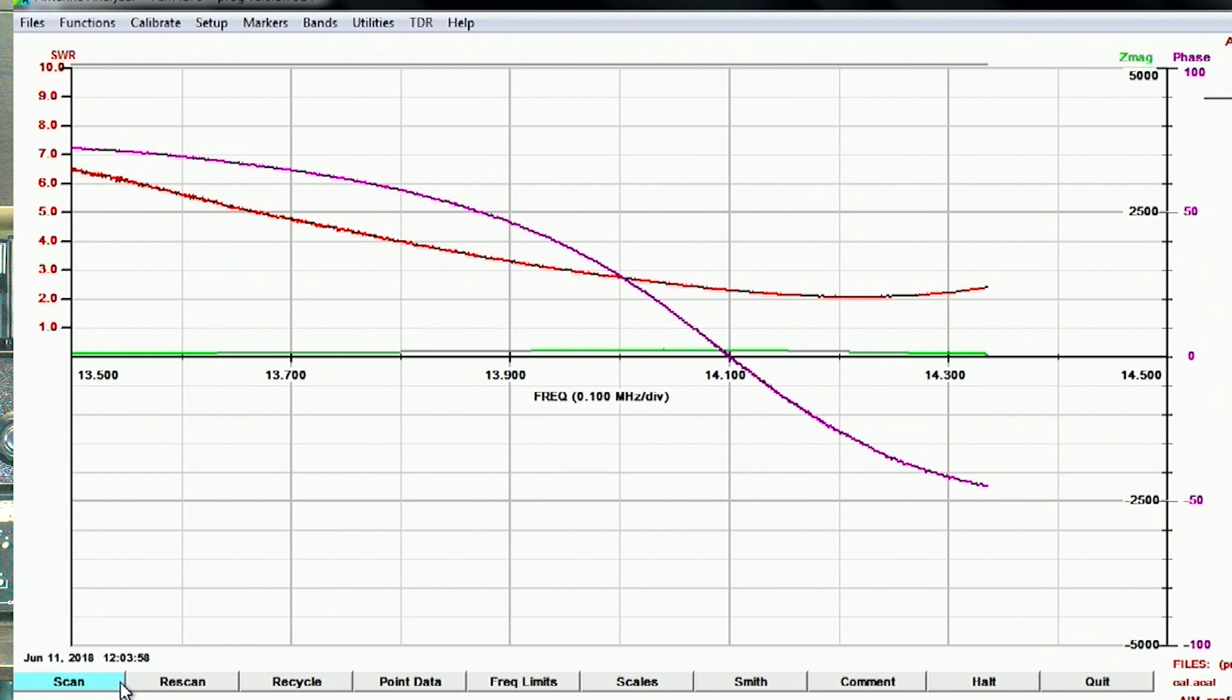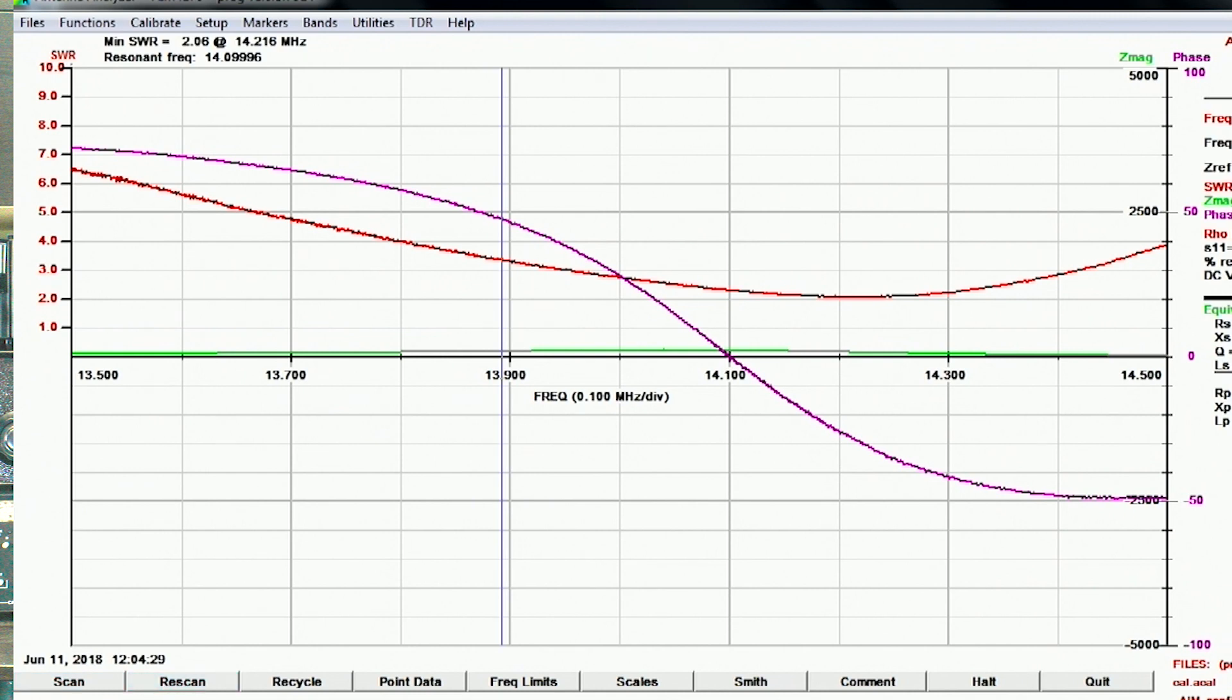The minimum SWR occurred at about 14200, specifically 14216. So the difference between the resonant frequency of the antenna and where the minimum SWR occurred is about 100 kilohertz, 14216 versus about 14100. So when someone says that they've tuned their antenna to resonance using an SWR meter, that may not be the case. The resonant frequency may actually be very different from where the minimum SWR occurred.